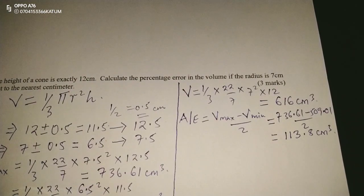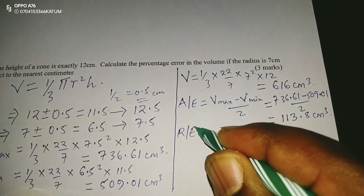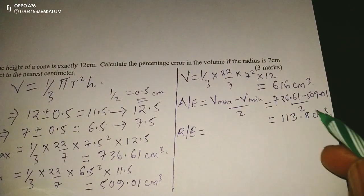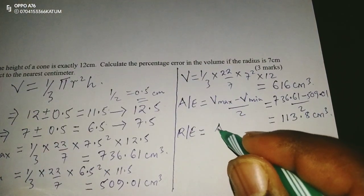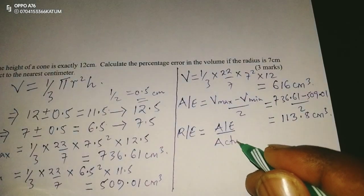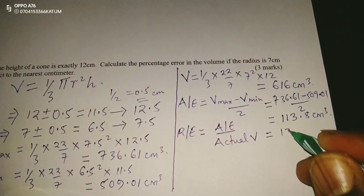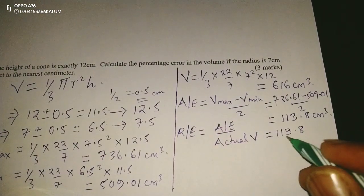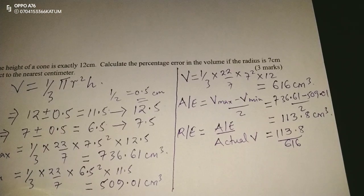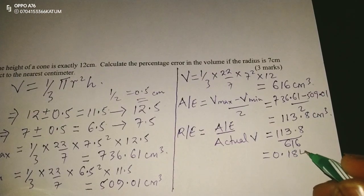There is also something called relative error, which is given by the absolute error divided by the actual volume. So this is 113.8 divided by 616, which gives us 0.1847 to four significant figures.